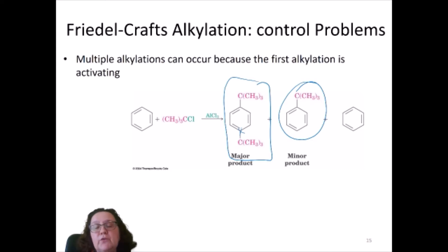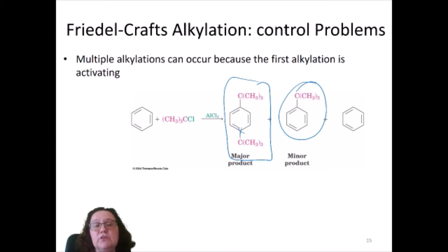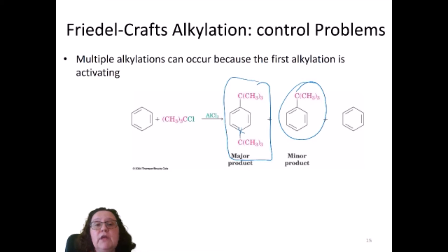So there are two problems. First, if you have a substituted benzene, you might not be able to do the reaction depending on what the substituent is — if it withdraws charge from the benzene ring, it makes it a worse nucleophile and the electrophilic substitution doesn't happen. Second, even with an unsubstituted benzene ring, you can have multiple products because different numbers of alkyl groups can enter the structure.